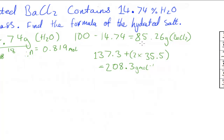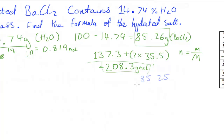Now I need to divide the mass of BaCl₂ by its molar mass using n = mass / molar mass. So I divide 85.26 by 208.3, which gives me 0.41 moles of BaCl₂.